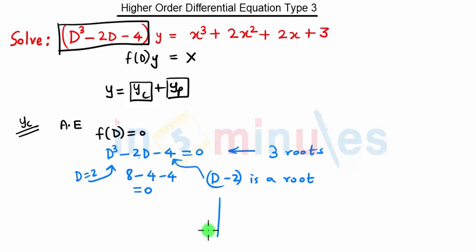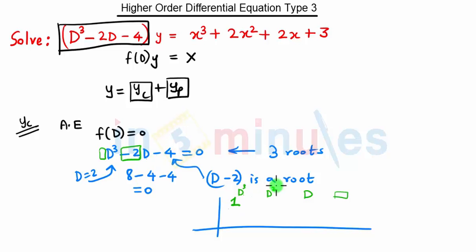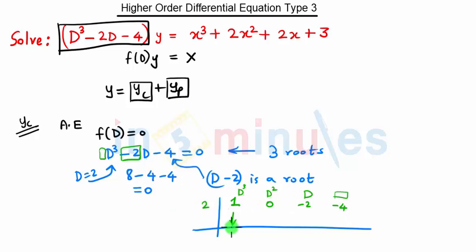When we know one root of the equation, the other two roots can be found using synthetic division. We write the coefficients: coefficient of D³ is 1, coefficient of D² is 0 (since D² is not present), coefficient of D is -2, and the constant is -4. Since D - 2 is a root, we write D = 2.